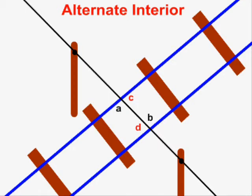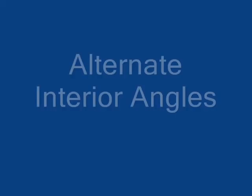Angles C and D do not have to have the same measure as angles A and B. Therefore, every time we make a transversal cross a pair of parallel lines, we are creating two pairs of alternate interior angles. In this case, angles A and B are one pair of alternate interior angles, which are congruent. And angles C and D are another pair of alternate interior angles, which are also congruent.